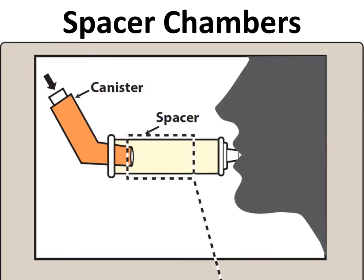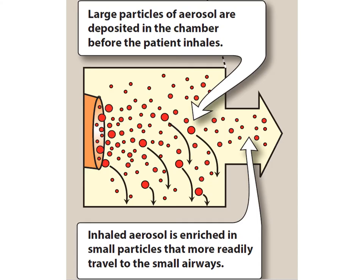The spacer chamber is another device where the canister connects to the spacer. Its advantage is that large particles of the aerosol are deposited in the chamber before the patient inhales, so the inhaled aerosol is enriched in smaller particles that more readily travel to the small airways. Accessibility to deeper areas of the lungs is improved using the spacer, as smaller particle sizes can cross the epithelial barrier between the alveoli and capillaries more easily.